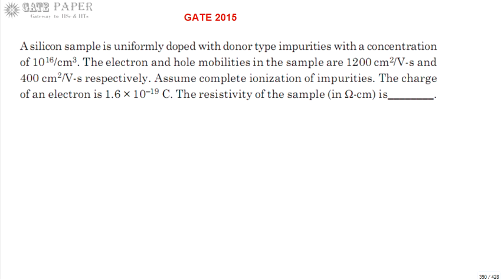Hello, we are discussing GATE 2015. A silicon sample is uniformly doped with donor type impurities with a concentration of Nd = 10^16 per centimeter cube. The electron and hole mobilities are given: electron mobility μn = 1200 centimeter square per volt second and μp = 400 centimeter square per volt second. Assume complete ionization of impurities. The charge of an electron is 1.6 × 10^-19 coulombs. We need to find the resistivity of the sample.